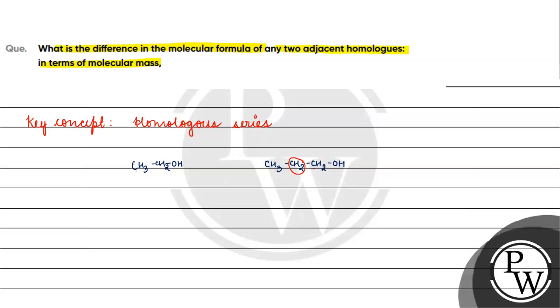In homologous series we differ by one CH2 unit. If we talk about these in terms of molecular mass, what is the difference? If we see the molecular mass of C2H5OH, it's 29 plus 16, which is 45, plus 1 equals 46 grams per mole.